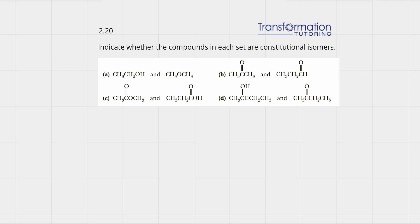We need to indicate whether the compounds in each set are constitutional isomers. Constitutional isomers are molecules that have the same exact formula but a different connection and different structure, and because of that they will be named differently. Let's go ahead and look at our examples and see whether they're constitutional isomers or not.